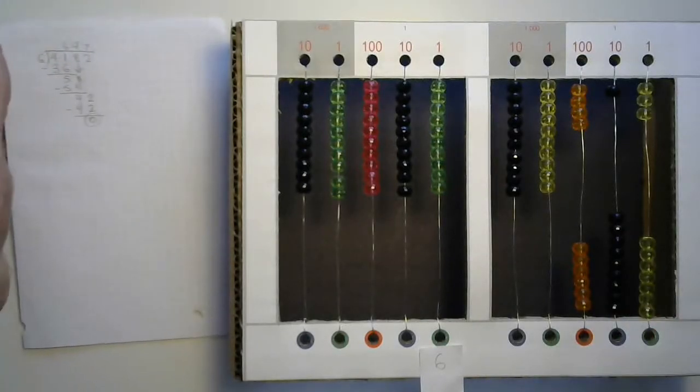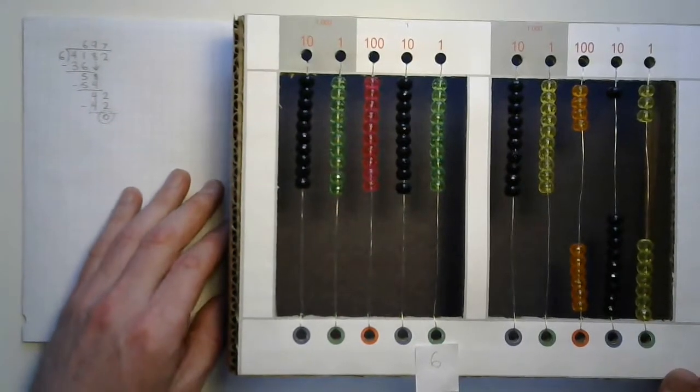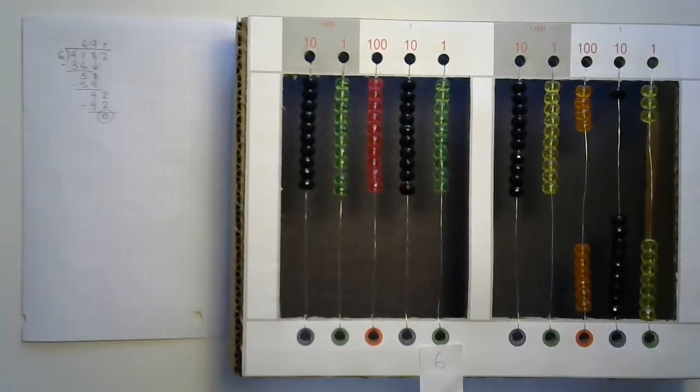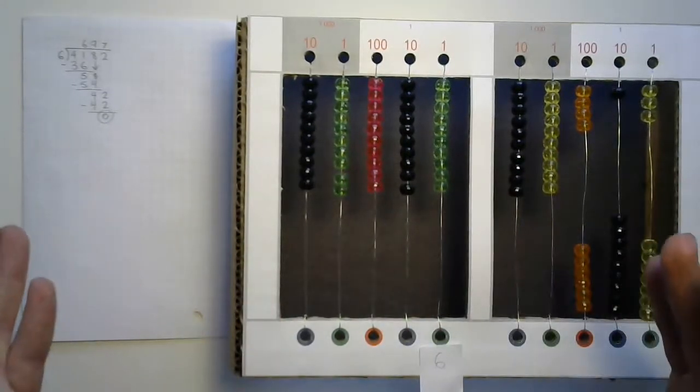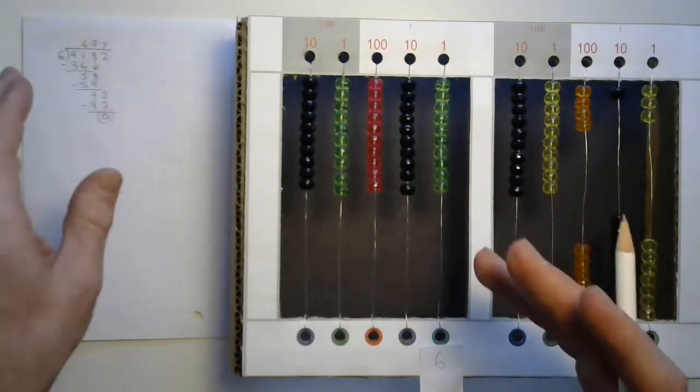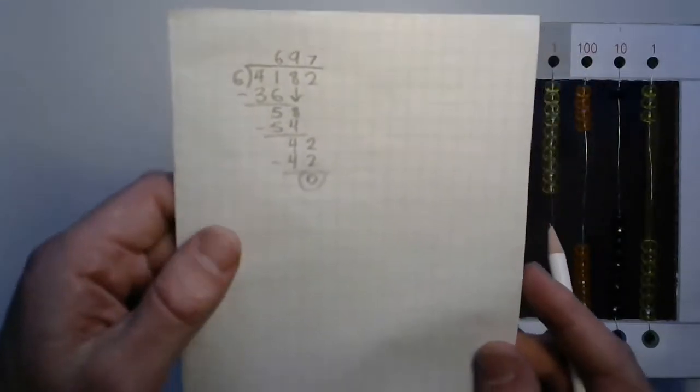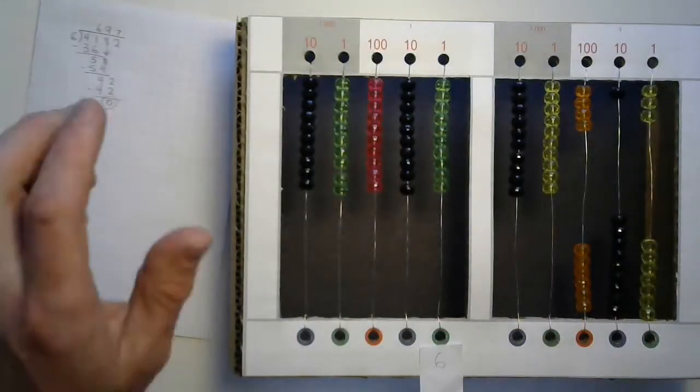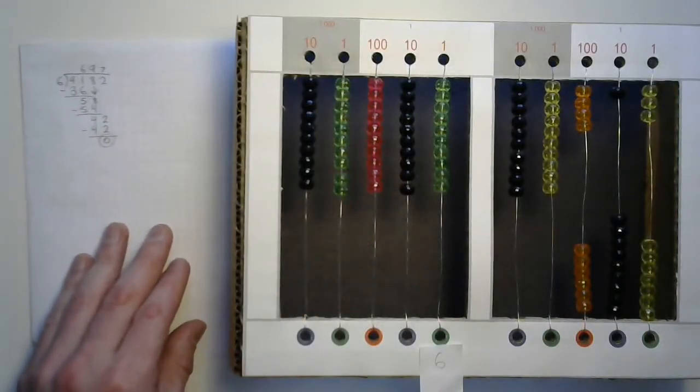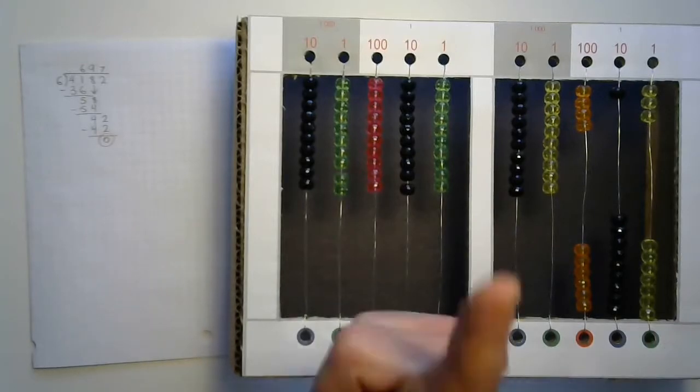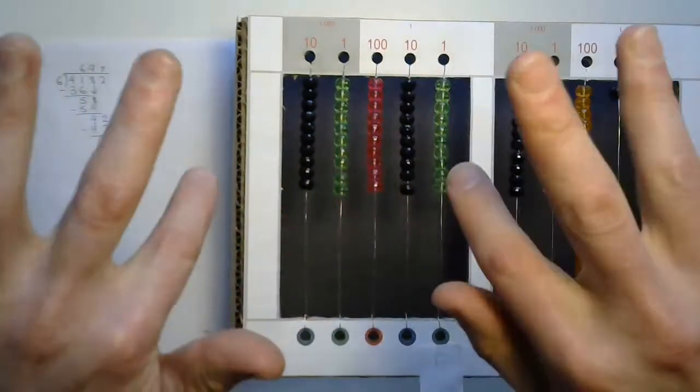4,182 fantastic, delicious, crunchy crackers were sitting on a table and you and five of your friends came over. That makes six of you. And each of you ate 697 crunchy crackers. Huh. I hope you have a glass of water to help wash that down. I'll see you again soon for some more Divided Bead Frame.